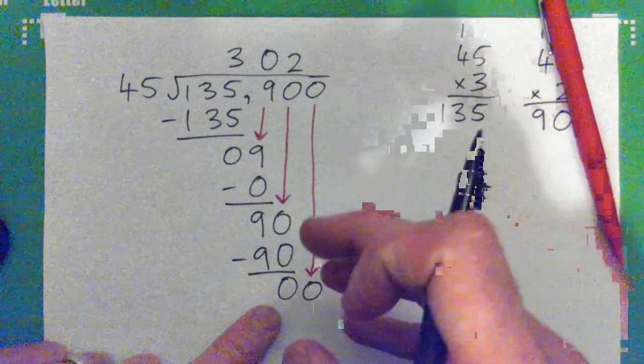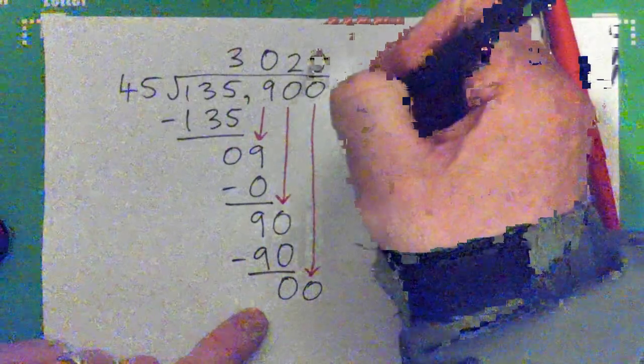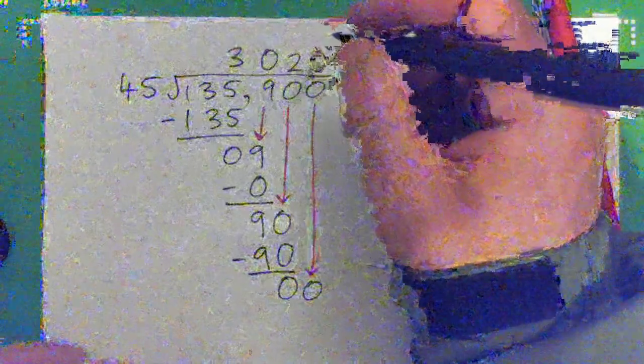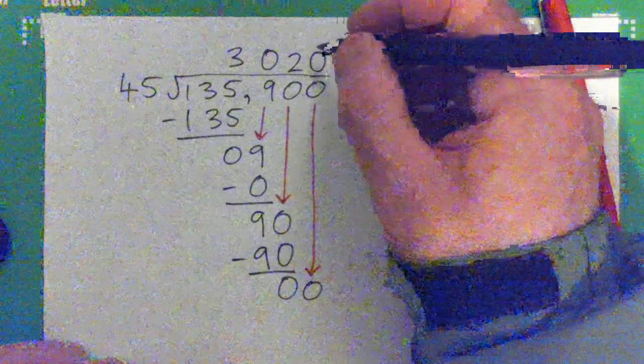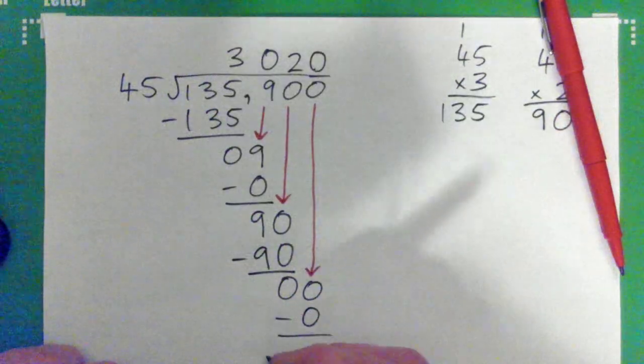How many 45s are contained in 0? There are none, 0. And now what do we do? 0 times 45 is 0, subtract to get remainder 0.